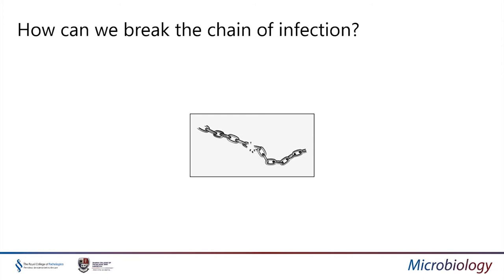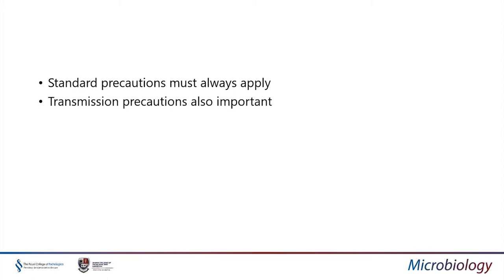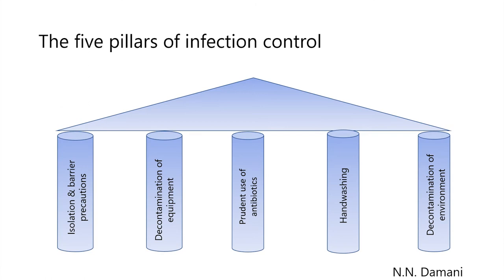It's important to break the chain of infection so there isn't ongoing transmission. Infection control needs to be part of your routine practice and standard precautions must always apply. However, transmission precautions are also important, especially with multi-drug resistant organisms. Demarney's five pillars of infection control are: isolation and barrier precautions, decontamination of equipment, prudent use of antibiotics, handwashing, and decontamination of the environment.